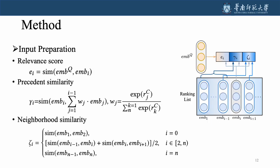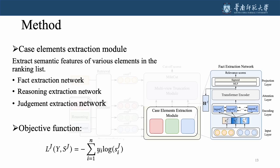Before truncation, we fully export semantic representations from dual encoder. Myocut employs a case elements extraction module to capture essential features of different case elements in the ranking list.